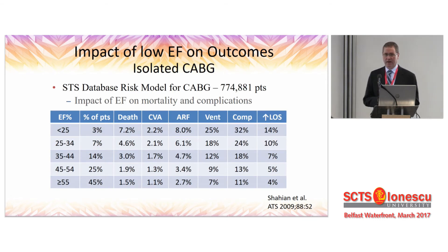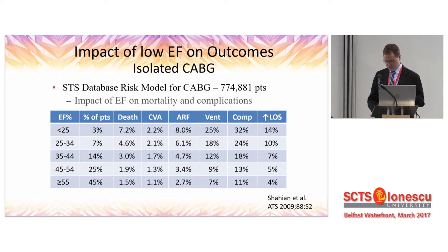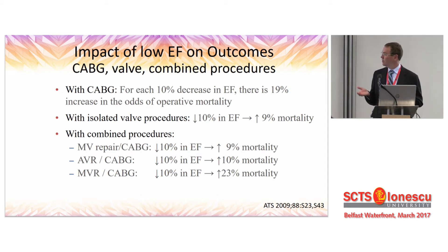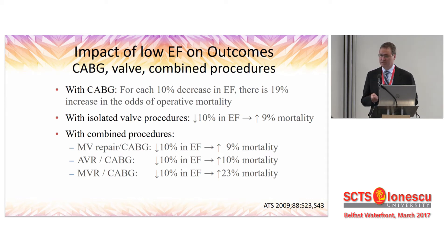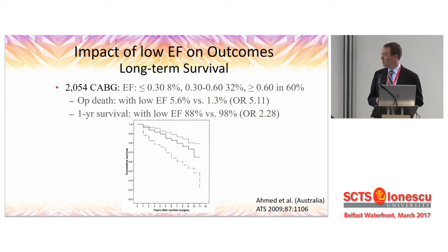This could help us identify patients at high risk who may need a different approach perioperatively. The STS database was examined for the impact of ejection fraction on outcomes — a dramatic difference between patients with a normal ejection fraction with a death rate of 1.5% versus those with an ejection fraction less than 25%, which had a death rate almost five times as high at 7.2%. With CABG, for every 10% decrease in ejection fraction, there was a 19% increase in the odds ratio for operative mortality. With isolated valve procedures, there was the same relationship, and with combined procedures it could be even more significant. Long-term survival data from 2,000 CABG patients also showed an impact not only on operative mortality but on late death at one year.